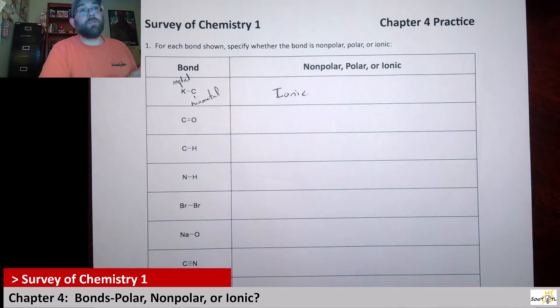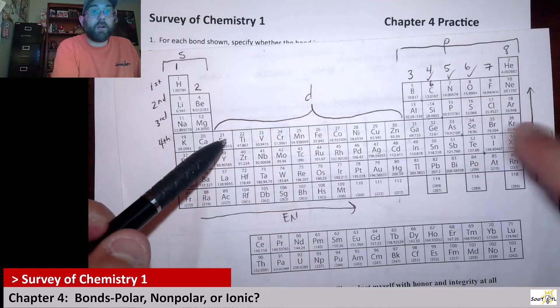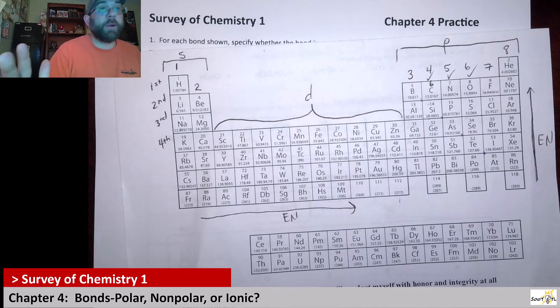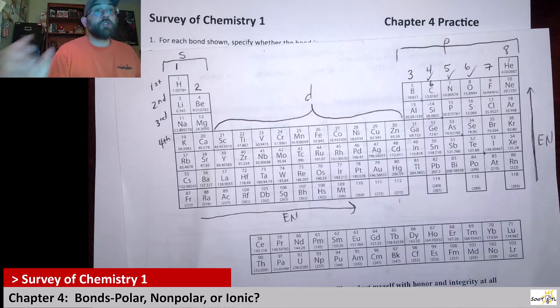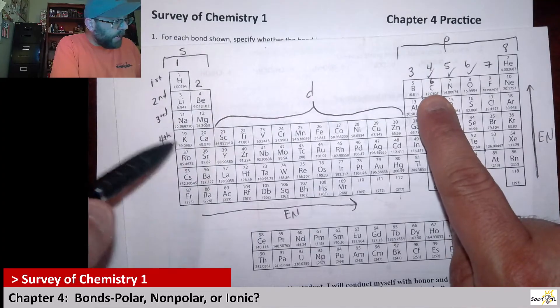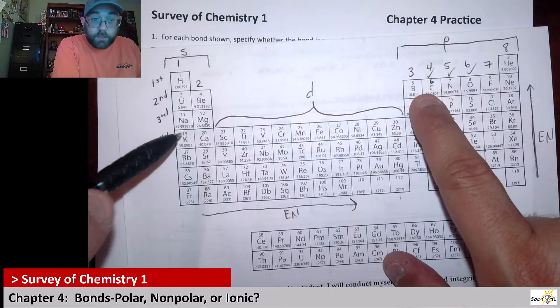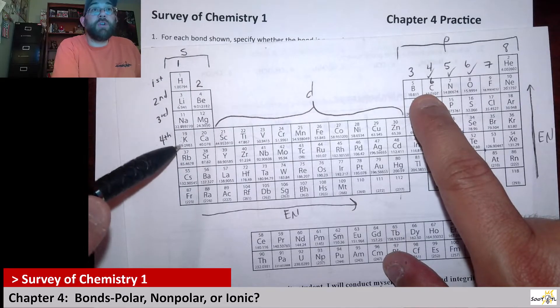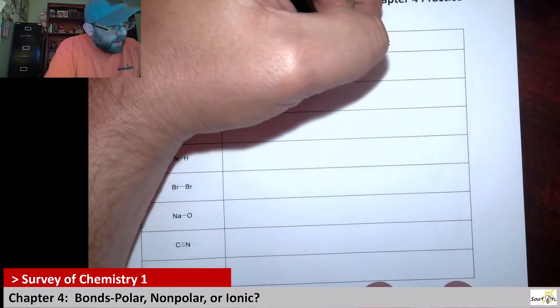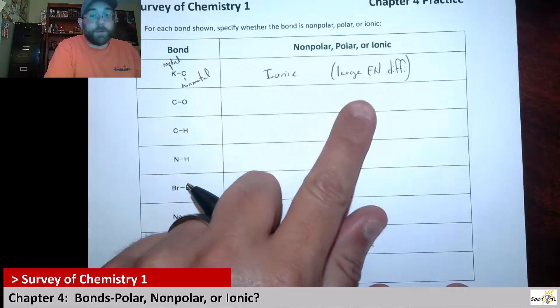Now why is it that metals and nonmetals give us ionic bonds? Because most of your metals are over here, and most of your nonmetals are over here. So the farther apart these elements tend to be from each other on the periodic table, the larger their difference in electronegativity. In this case, carbon is more electronegative than potassium. It's higher up, it's further to the right. This one's lower down, it's further to the left. So there's a huge difference in electronegativity here.